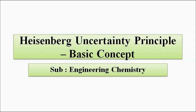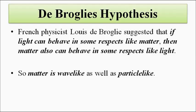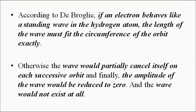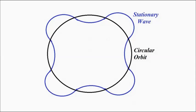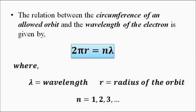Before we discuss, let us have a quick look at the de Broglie hypothesis, which is where this whole thing — the Heisenberg uncertainty principle — is coming from. According to the de Broglie hypothesis, matter exhibits both wave-like and particle-like characteristics. An electron orbiting around the nucleus behaves like a stationary wave, and the integral multiple of that wavelength is equal to the circumference of the circular orbit.